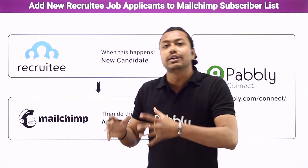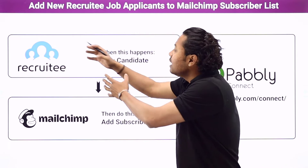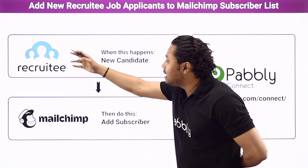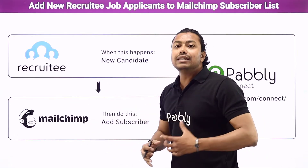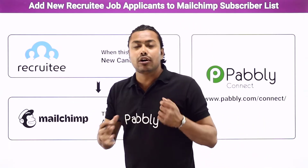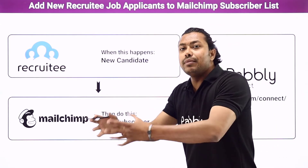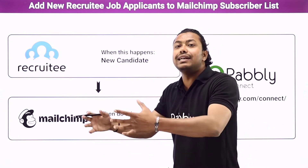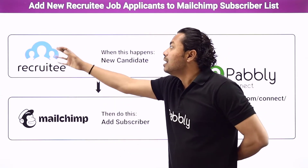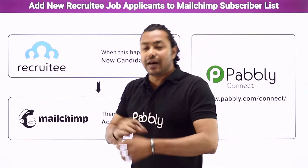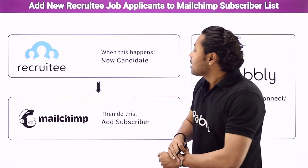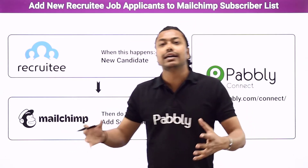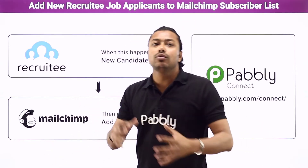Why would this automation be helpful? Whenever new candidates are added to your MailChimp account and you have a new job opening, you or your team can send bulk emails through MailChimp to candidates who were not hired previously so they can apply again. Also, you can use those contact details as leads for new marketing of products or services.